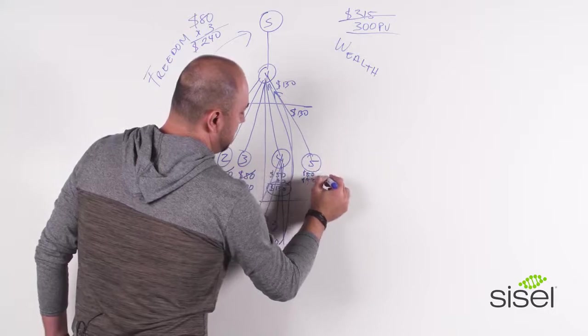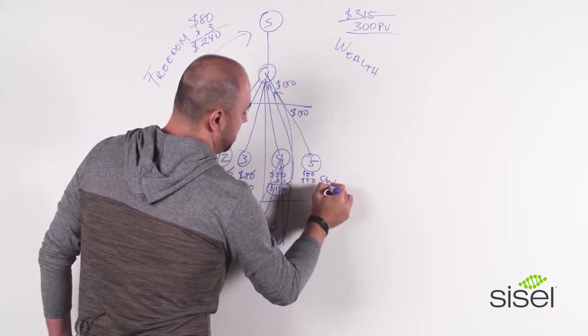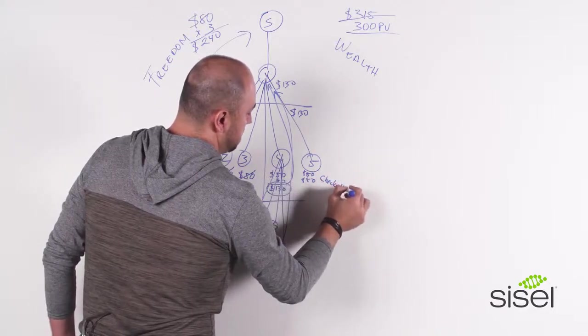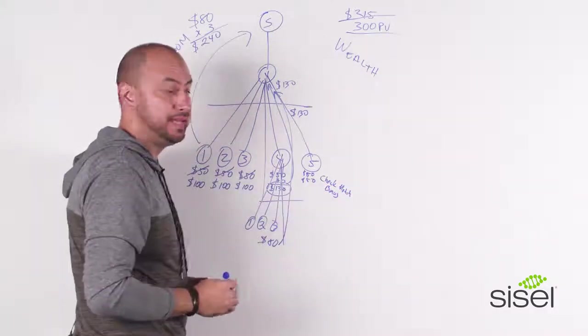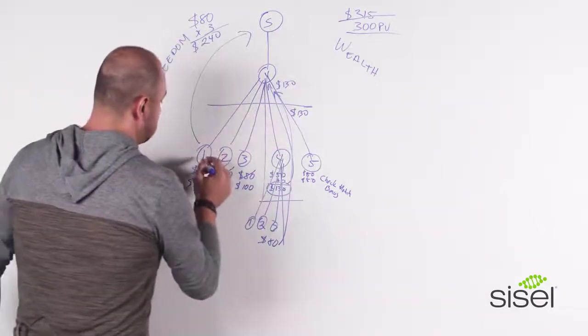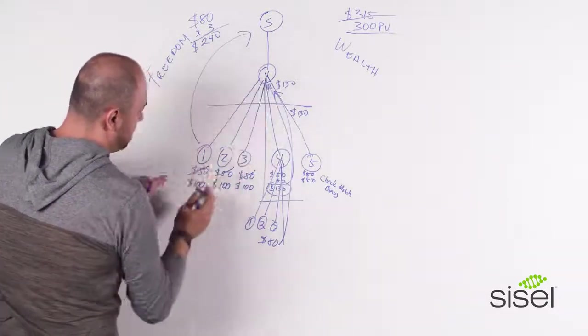And this will also trigger what we call the check match bonus. And this is how this pays. So let's make an example with number one. Now we're going to their freedom side.